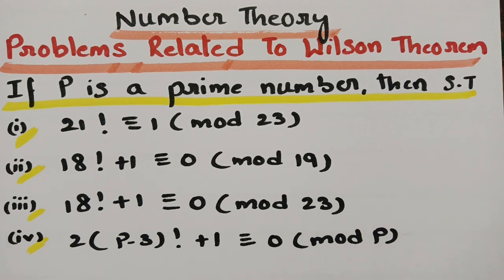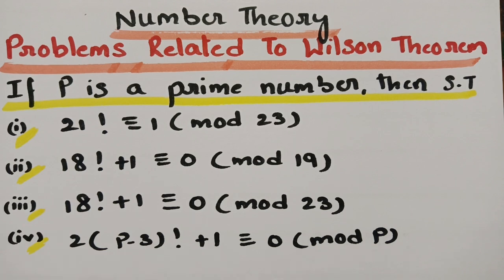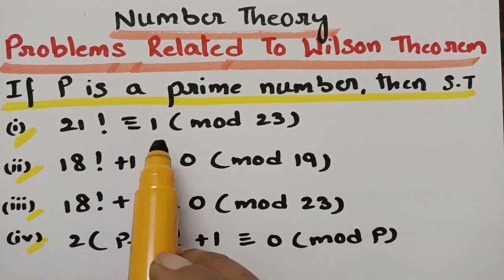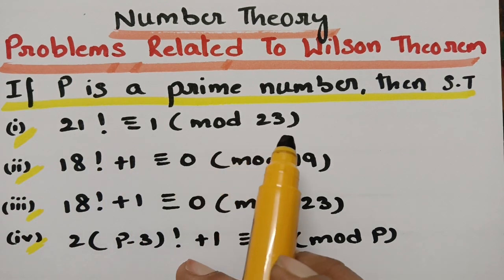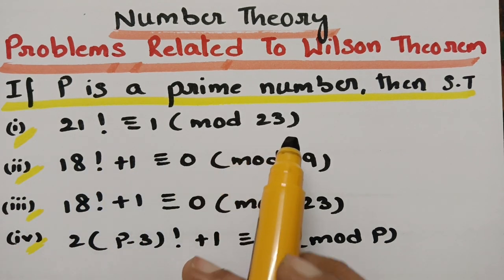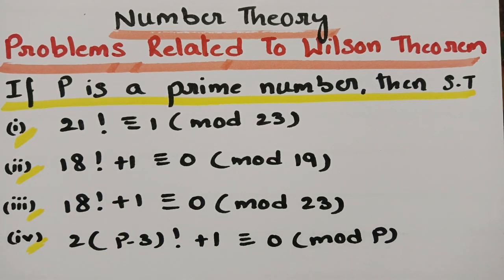If P is a prime number, then we have to show that: 21! ≡ 1 (mod 23); 18! + 1 ≡ 0 (mod 19); 18! + 1 ≡ 0 (mod 23); and 2(P−3)! + 1 ≡ 0 (mod P).